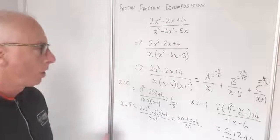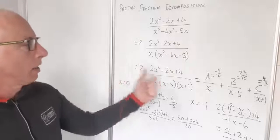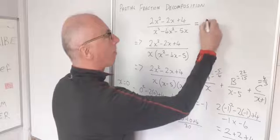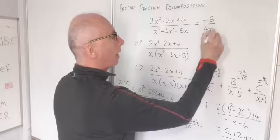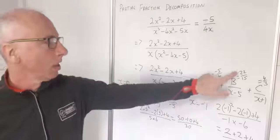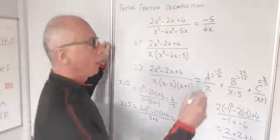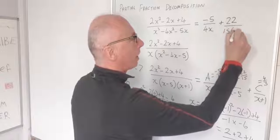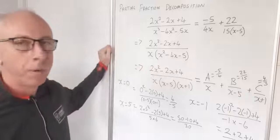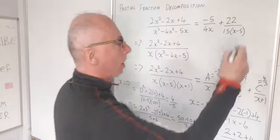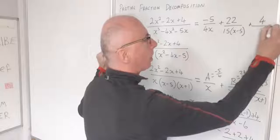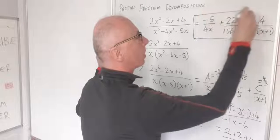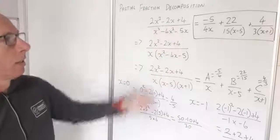That's the hard part done. Writing up the final answer with all coefficients: the partial fraction decomposition is minus 5 over 4x, plus 22 over 15 times x minus 5, plus 4 over 3 times x plus 1. That is the complete partial fraction decomposition of the original expression.